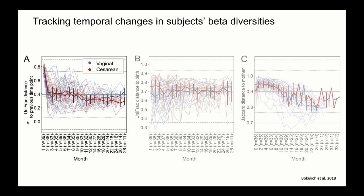UniFrac distance to previous time point is on the y-axis and month is on the x-axis. You can see that both delivery modes show large beta diversity distances in the first month, signifying a dramatic shift in the gut microbiome, but this shift was slightly greater in cesarean individuals. These results can be piped through an LME model to see if changes are significant. After one month, the gut microbiome stabilizes over time for both groups. Remember, here you are seeing the distance between successive time points — one month is compared to two months, two months to three months, and so on.